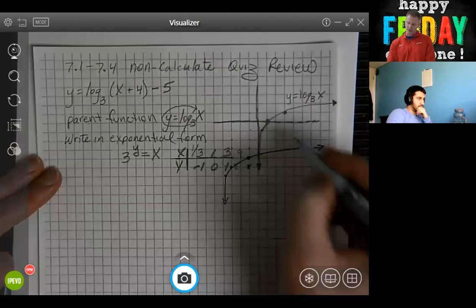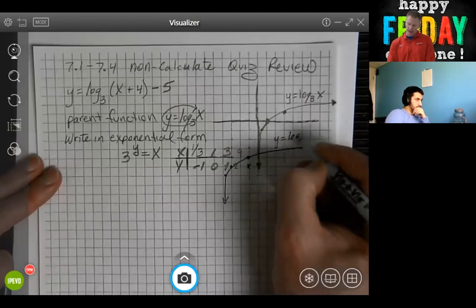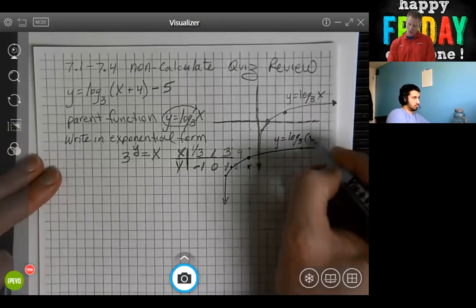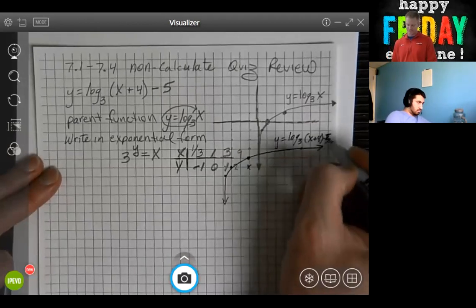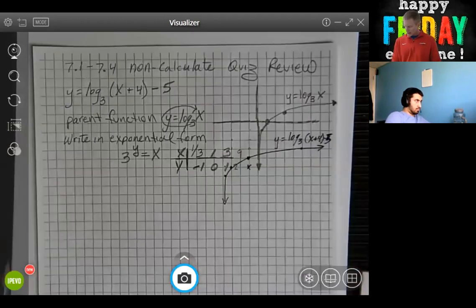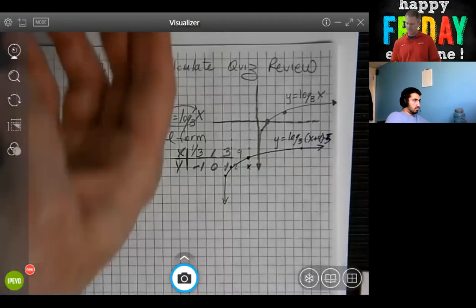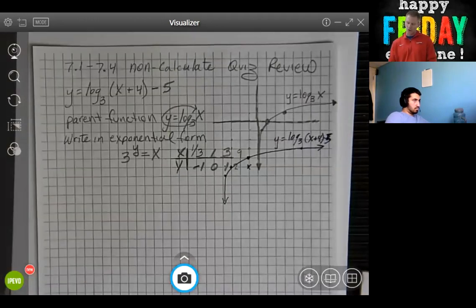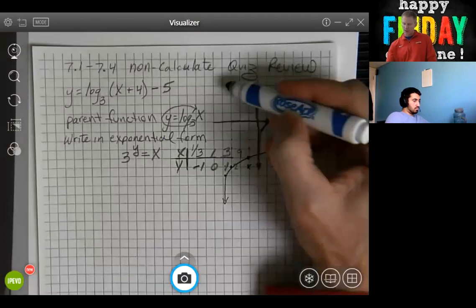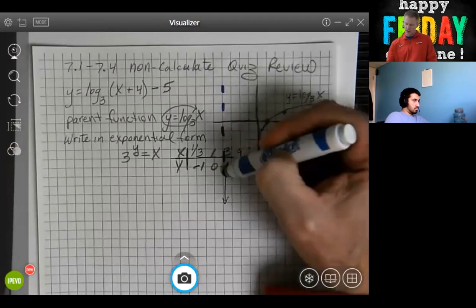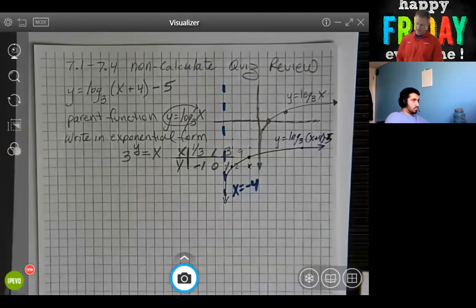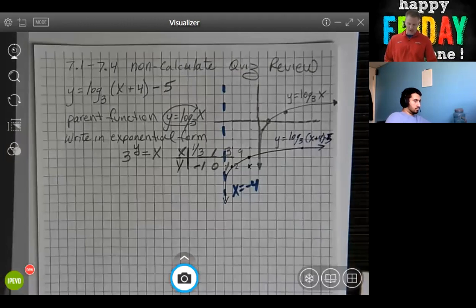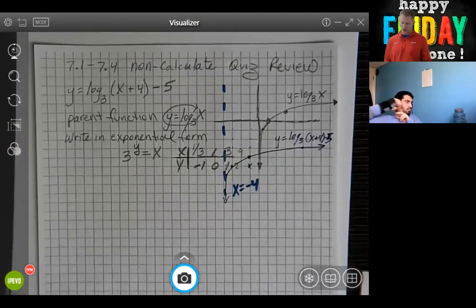So that's the graph log base 3 of x plus 4 minus 5. So when you move it out there, you know that you're going to have a translation of 4 to the left, which is going to bring your asymptote 4 to the left. And you want to be sure to label that. When you're graphing a logarithm, we have vertical asymptotes.